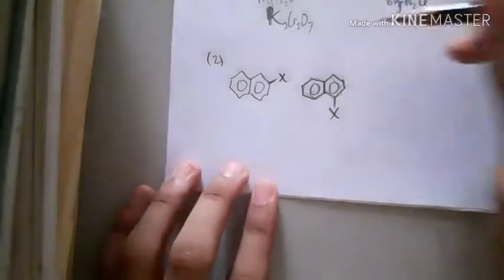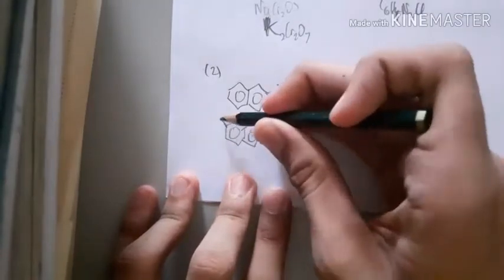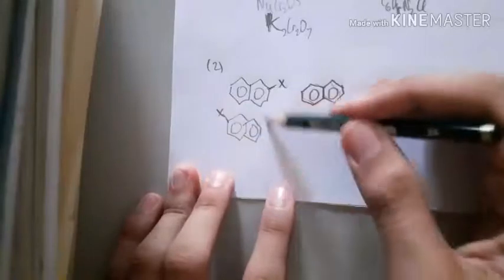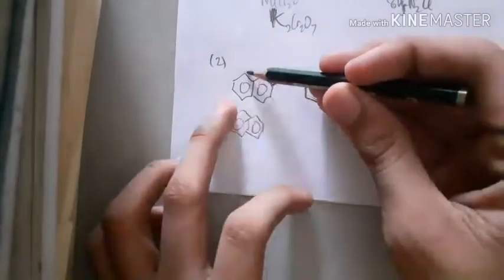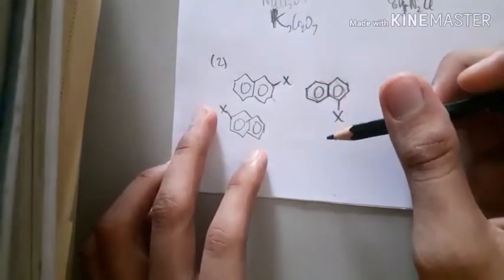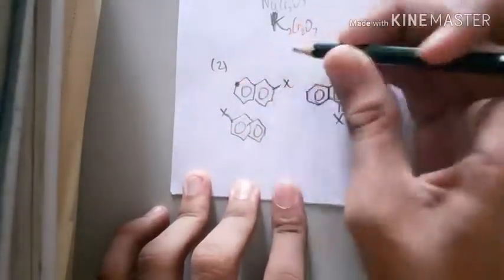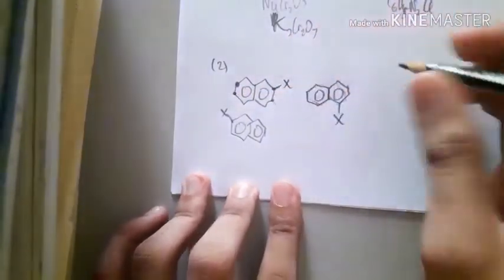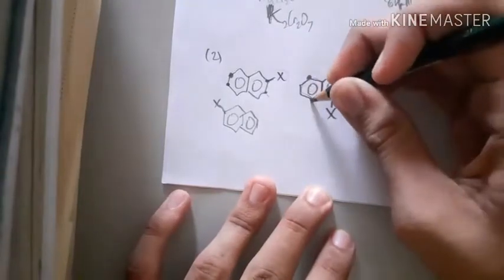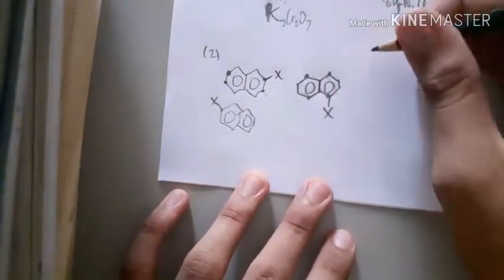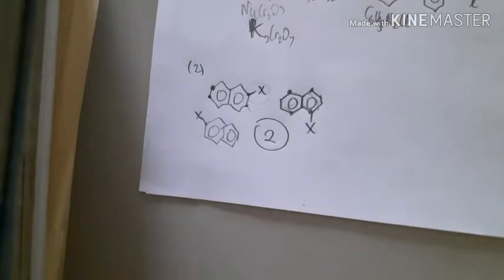If you have X here on naphthalene, it is the same — you just turn it and it becomes the same position, that is not an isomer. If you put X at any position on one ring, they are all the same exact position. Similarly, on the other side, any position there also gives only one unique arrangement. Therefore, mono-substituted naphthalene has only two isomers.